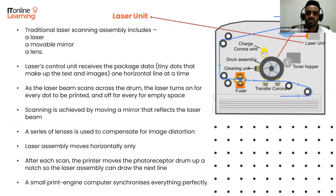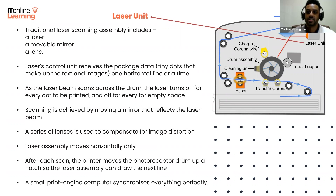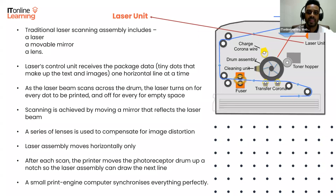The laser beam scans across the drum — the laser turns on for every dot to be printed and off for every dot of empty space. Instead of moving the laser beam itself, the scanning is actually achieved by moving a mirror that reflects the laser beam. A series of lenses are also used to compensate for the image distortion caused by the varying distance between the mirror and points along the drum surface.